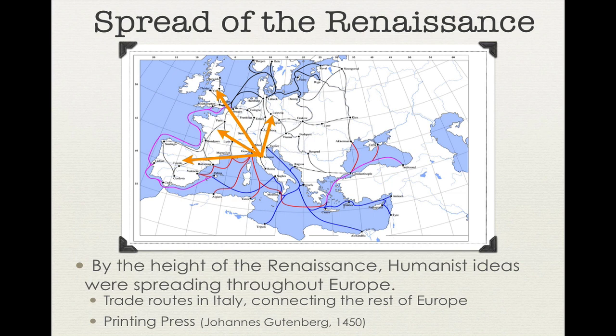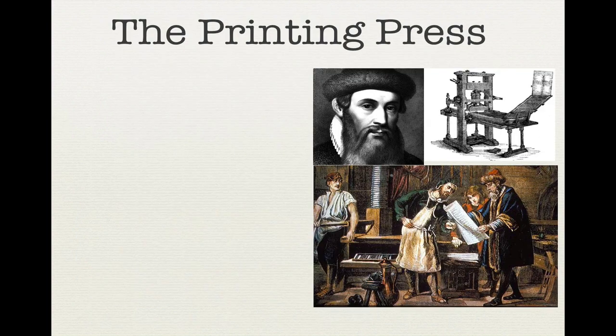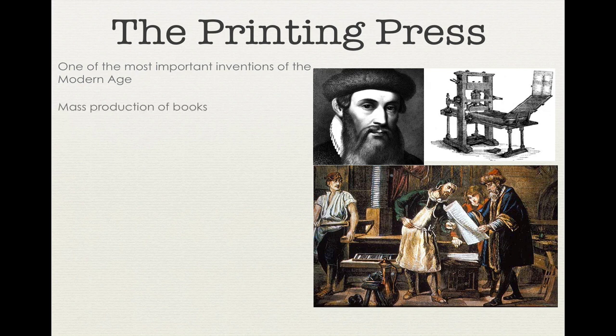Also in 1450, Johann Gutenberg invented a machine called the printing press, which created the first form of mass media. Books, pamphlets, and other reading materials became more accessible to many people, which aided in the spreading of humanist ideas. Gutenberg's printing press is one of the most important and influential inventions of the modern age, as it allowed for the mass production of books, making the bookmaking process much quicker and more efficient.